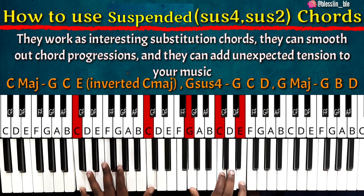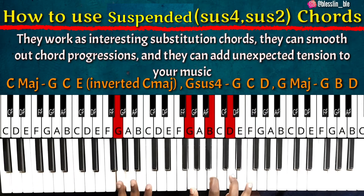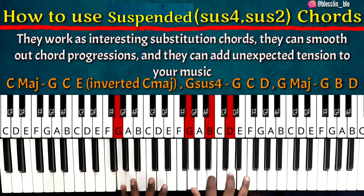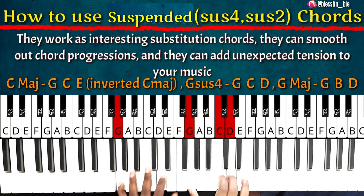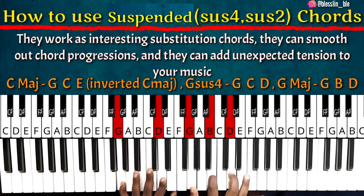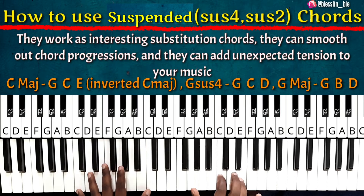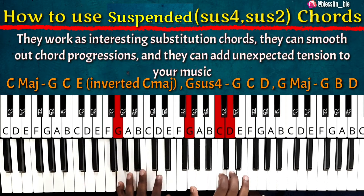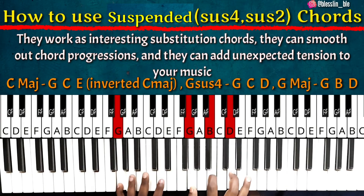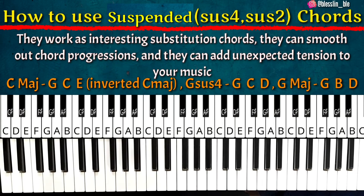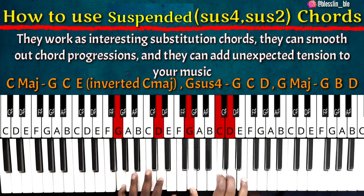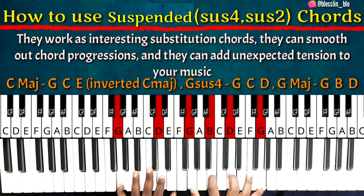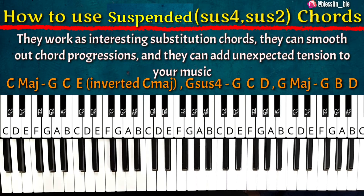C major. If you want to do G major, it will sound better if you use suspended chords. For example, C major, then C suspended fourth. G major — let's do it. C major, then G suspended fourth.